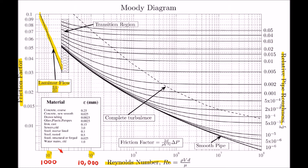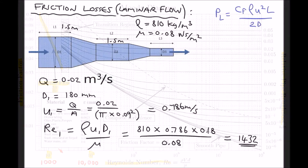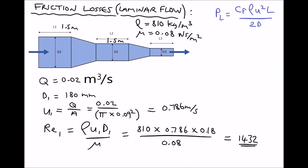Let's return to our calculations. We can determine our friction factor using the formula, and then calculate the pressure loss using the Darcy equation. From the Moody diagram, the friction factor Cf is 64 over the Reynolds number. In this case we have a Reynolds number of 1432, so 64 over 1432 equals 0.0447. That's dimensionless, so our value of Cf is 0.0447.